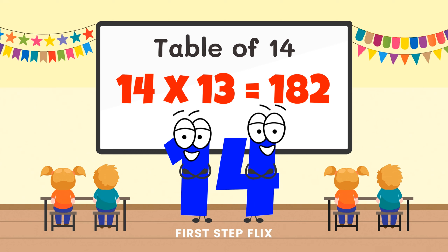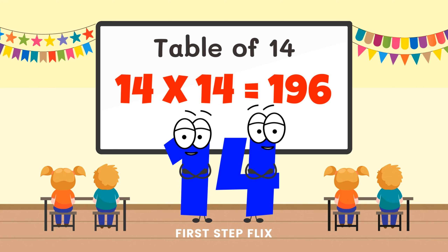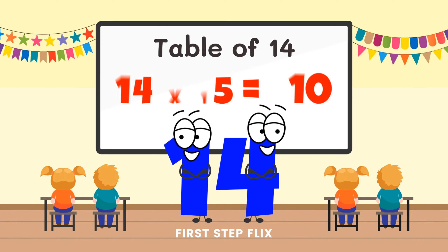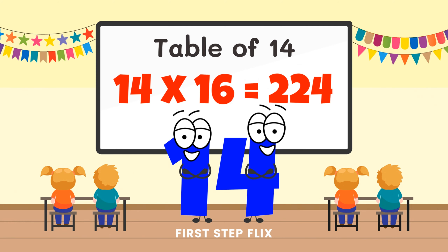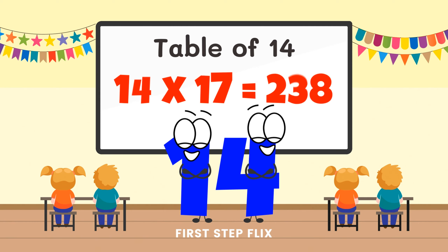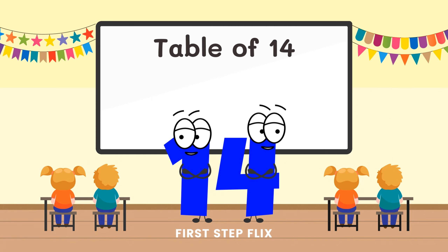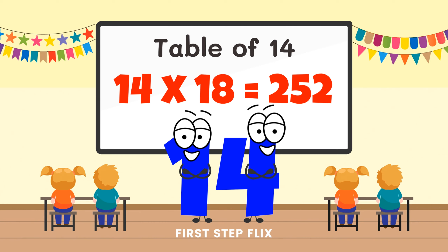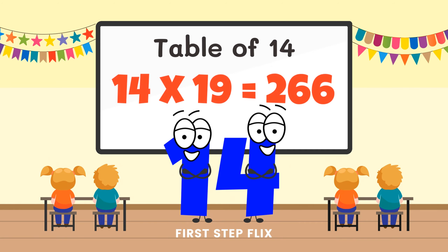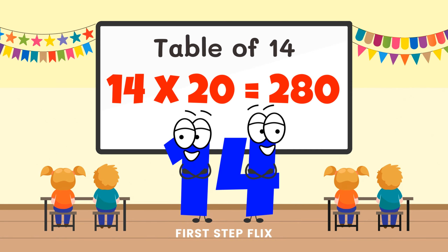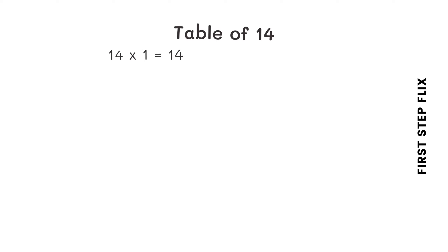14 thirteens are 182. 14 fourteens are 196. 14 fifteens are 210. 14 sixteens are 224. 14 seventeens are 238. 14 eighteens are 252. 14 nineteens are 266. 14 twenties are 280. Let's repeat one more time. 14 ones are 14. 14 twos are 28. 14 threes are 42.